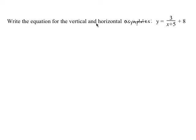Write the equation for the vertical and horizontal asymptotes of this function. For vertical asymptote, I call it the VA, and the horizontal asymptote, I call it HA.